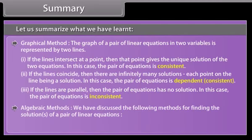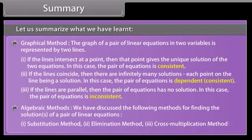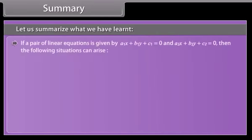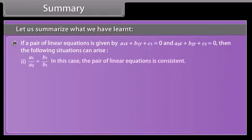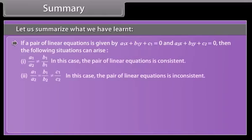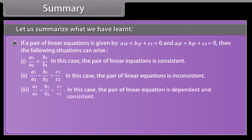Algebraic methods summary: We have discussed the following methods for finding solutions of a pair of linear equations: 1. Substitution method, 2. Elimination method, and 3. Cross multiplication method. For a pair given by A1x + B1y + C1 = 0 and A2x + B2y + C2 = 0: if A1/A2 ≠ B1/B2, the pair is consistent; if A1/A2 = B1/B2 ≠ C1/C2, it is inconsistent; and if A1/A2 = B1/B2 = C1/C2, it is dependent and consistent.